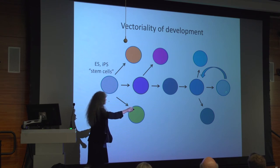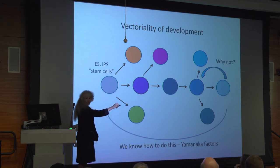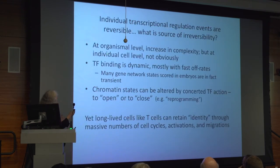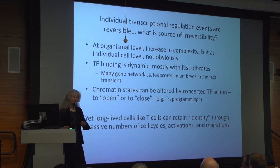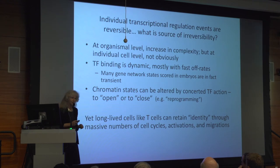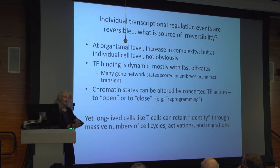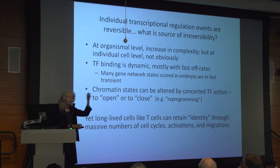Why can't we reverse it? At the organismal level, Eric Davidson used to talk about how embryogenesis gave you irreversibility through an increase in complexity — sort of an entropy argument. But at the individual cell level, there's not an increase in complexity; there's just an accumulation of epigenetic history. Transcription factor binding itself is extremely dynamic, mostly with extremely fast off rates, and many of the gene network states you score in embryos are in fact transient. So how does a T cell migrating around the body for most of your lifetime remember that it's a T cell through multiple rounds of activation, cell cycling, resting, and so forth? We have to think about this as being encoded in the epigenetic marks.